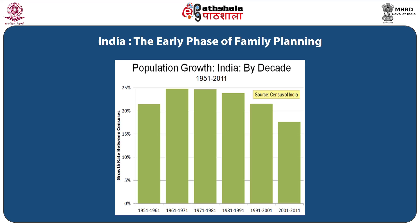This is the pattern of population growth rate in India from 1951 to 2011. In 1951 to 1961, the population growth was in the range of 20 percent. In 1961 to 1971, the decadal growth rate was 25 percent, slightly decreased or almost remained the same in 1971 to 1981. The 1981 to 1991 period saw a slight decrease, and 1991 to 2001 saw further decrease. The decade 2001 to 2011 saw the maximum decline in the population growth rate in India, according to census of India data.